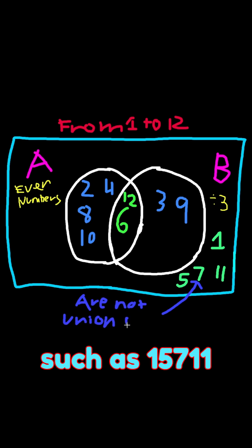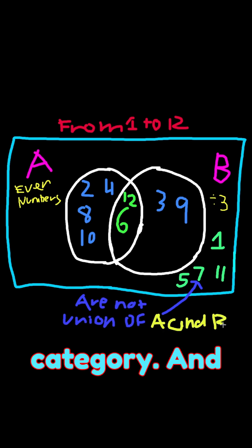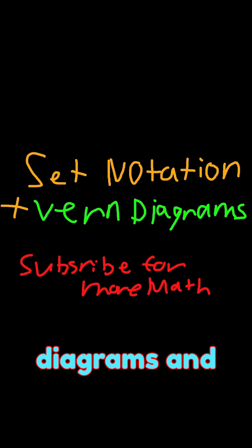Numbers such as 1, 5, 7, 11 will not fit in that category. And that's the basics of Venn diagrams and set notation.